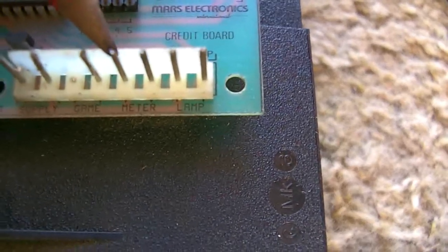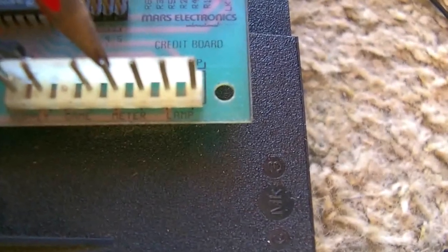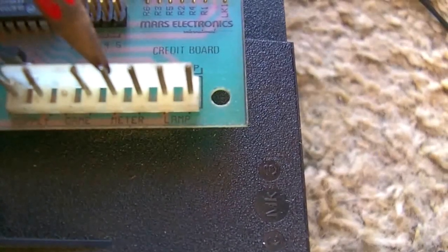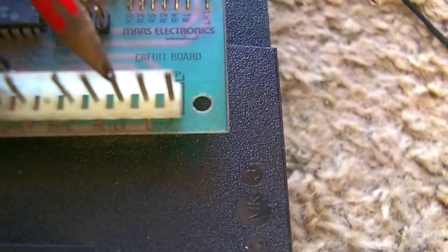So the first pin is the 12 volts and that would go to your coin meter, and then the other one is the signal wire that also goes to your coin meter. It doesn't matter what way you get those wired up.